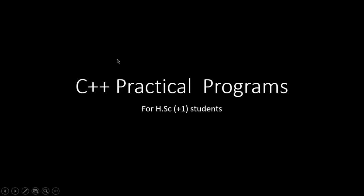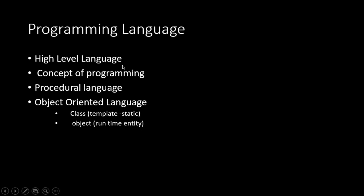Computer is not intelligent to understand the things what we speak. So it is the duty of the programmer to tell what instructions to give and how the computer is going to understand. A programmer practically thinks about the logic, then writes it as an instruction and gives it to the computer. The computer processes it and gives the result to the user. For that we have a language called high level languages. There are many high level languages to program, but the part you are going to learn is about C++, which is a higher version of C. Programming is giving instructions to the computer to do some work we need.